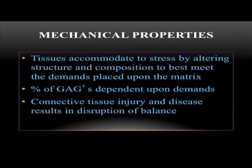We want to have both fibrous and non-fibrous elements. All of these structures have mechanical properties. Tissues accommodate to stress by altering structure and composition to best meet the demands placed upon the matrix. The percent of GAGs is dependent upon the demands put upon the tissue through mechanical properties. Connective tissue injury or disease will result in disruption of the balance of these chemicals, particularly the GAGs.